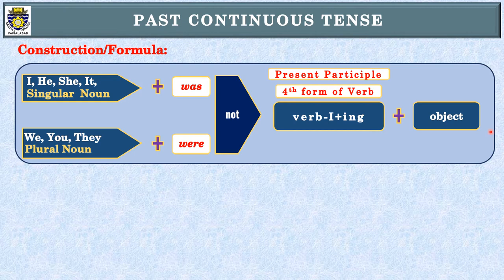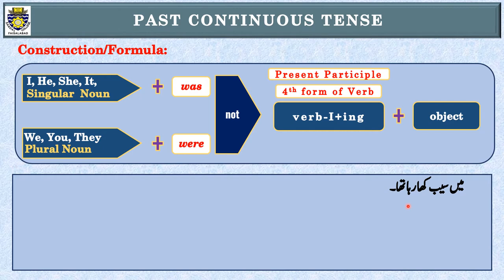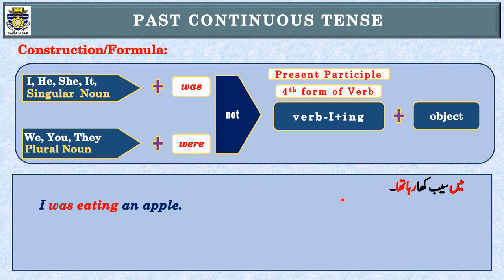اب دیکھتے ہیں کچھ examples۔ مَیں سیب کھا رہا تھا۔ میں ہمیشہ steps follow کرتا ہوں، اور آپ سے بھی یہی چاہتا ہوں کہ آپ بھی ان steps کو follow کریں۔ First step: identification of tense — sentence کے آخر میں دیکھیں 'رہا تھا' ہے، جو Past Continuous Tense کی پہچان ہے۔ Second step: subject کیا ہے — 'مَیں'، جس کی English I ہے۔ Third step: translation — I کے ساتھ was use کرنا ہے، پھر ing add کریں گے۔ I was eating an apple — simple/affirmative/assertive/positive sentence۔